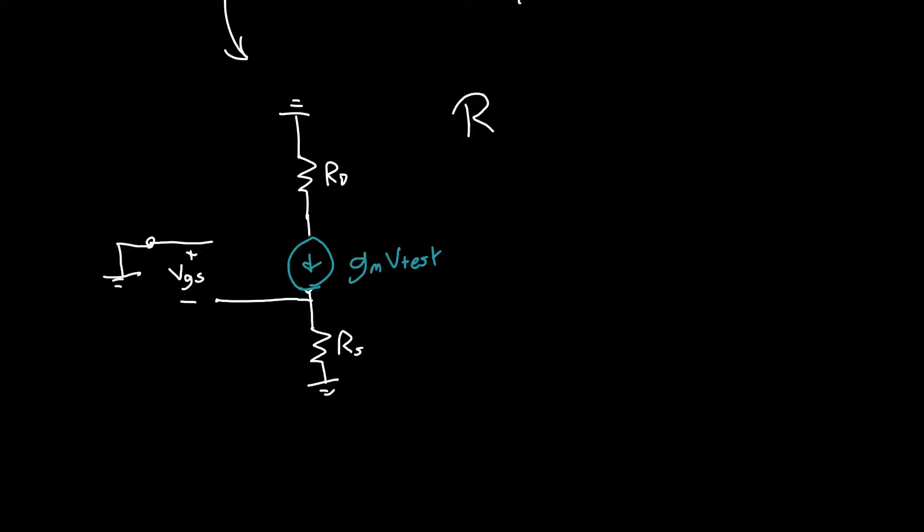What is VGS in this circuit? VGS is just VG minus VS, and since VG is zero because it's grounded, this is just minus VS. What is VS? This is VS. We've got a current GM V test flowing through this resistor RS, which means that the voltage here VS is just going to be GM V test times RS.